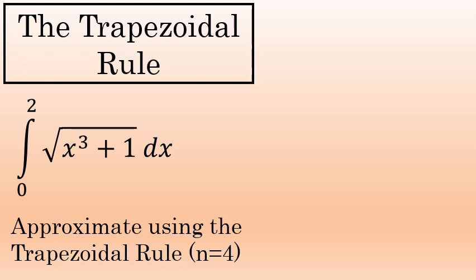The definite integral of the square root of x to the third plus 1 from 0 to 2 dx is very difficult to evaluate exactly. In fact, it simply cannot be done using basic integration rules. In this problem, we're asked to give an approximate value for it using the trapezoidal rule with n equals 4.